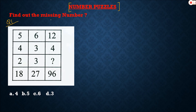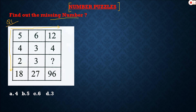Question number one: find out the missing number. Whenever you get a question from number puzzles in the exam, first we need to identify what kind of logic to apply. The logic will be applied either from left to right or from top to bottom. Here we have four rows, so most probably the logic will apply from top to bottom.